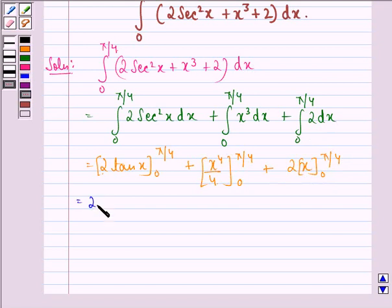Now, this is equal to 2 into tan pi by 4 minus tan 0, plus here we will have pi by 4.